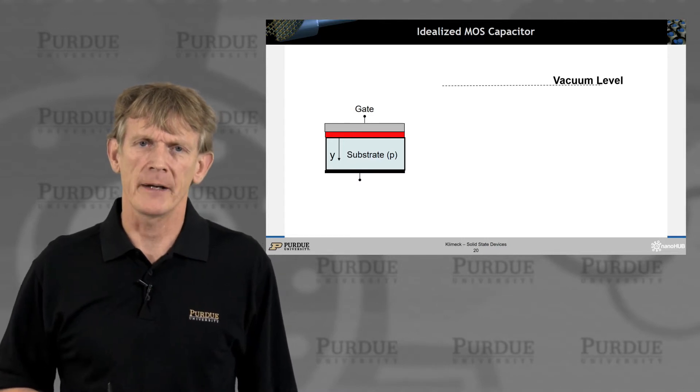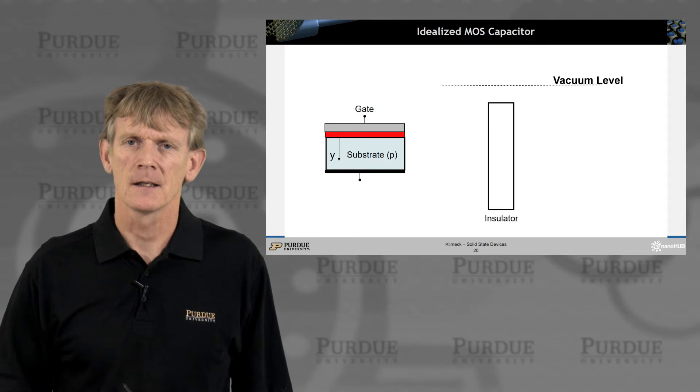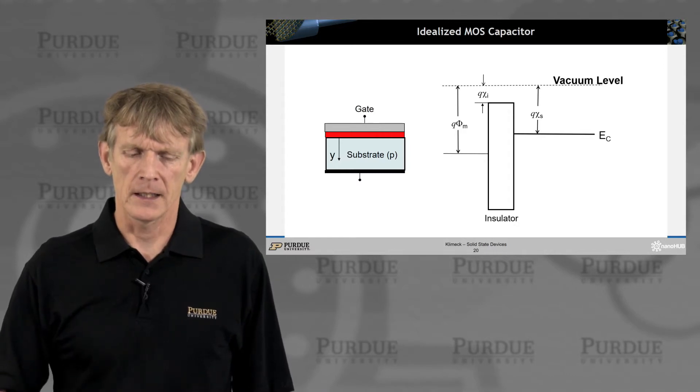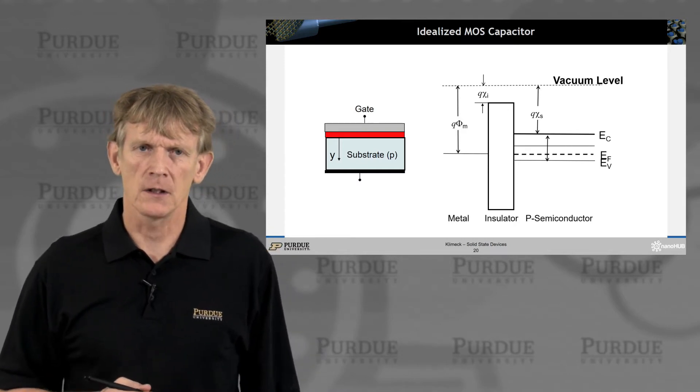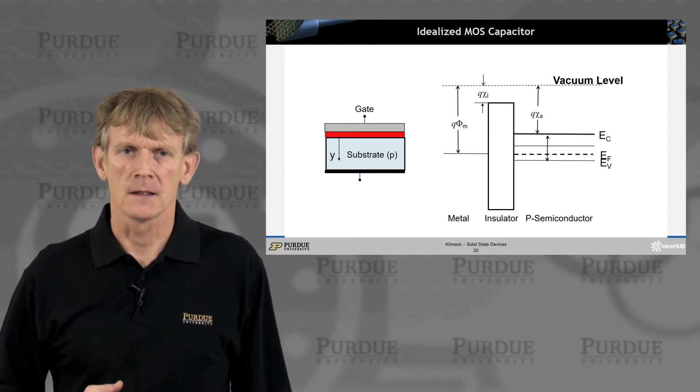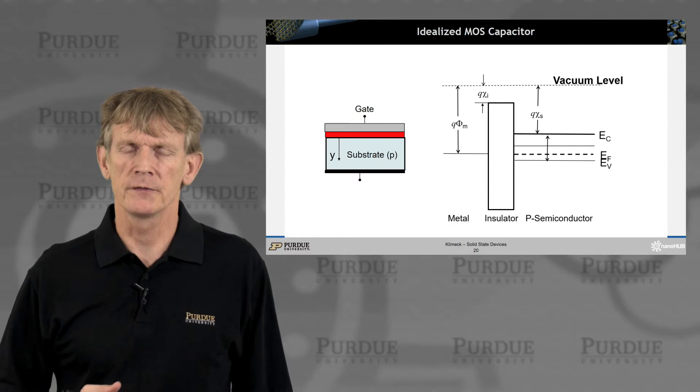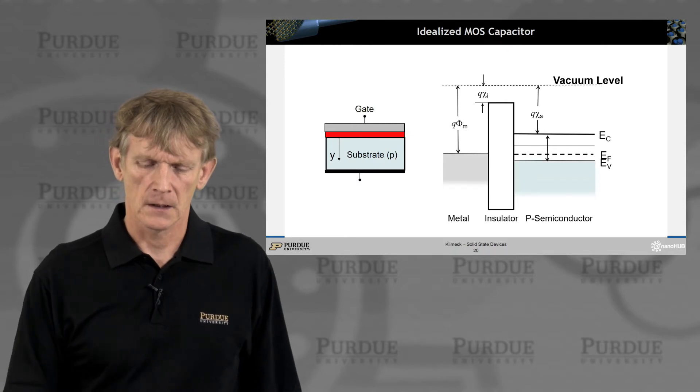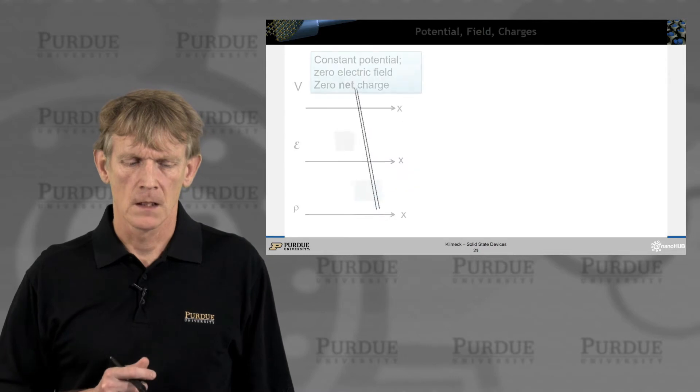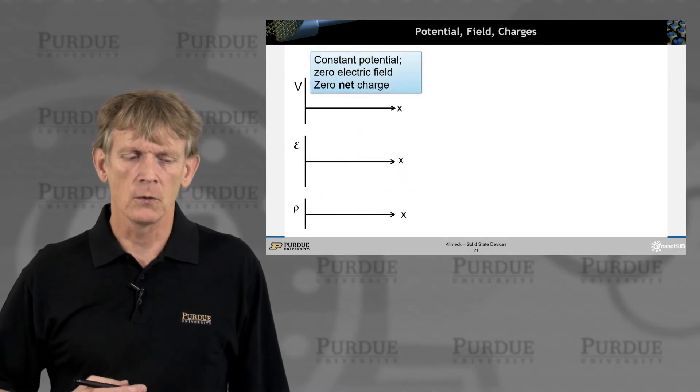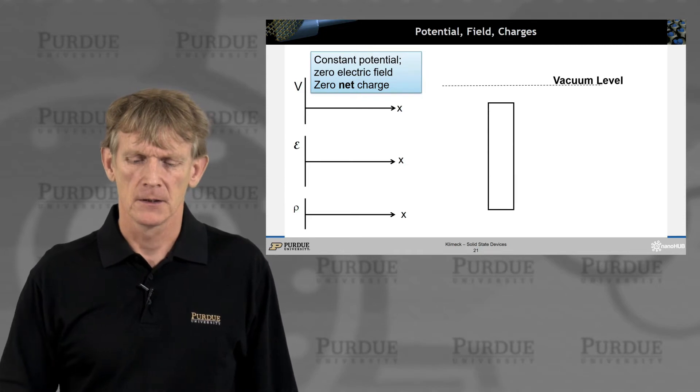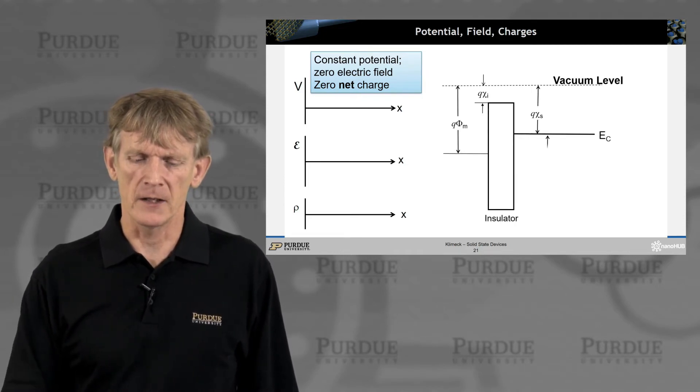All right, so let's look at this idealized MOS capacitor again. So we start from the vacuum level, we have the oxide or the insulator like this, and we draw the electron affinity and work functions in here, and draw the Fermi level in there. So this is the so-called flat band sketch of the MOS device, and we'll refer to that as the ideal condition because it serves us as a reference level. All right, so if there is no charge, then there is no electric field, and there is no built-in potential. So it is basically flat, like this.